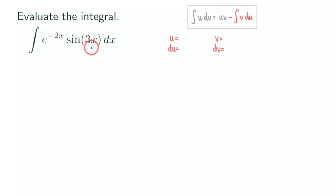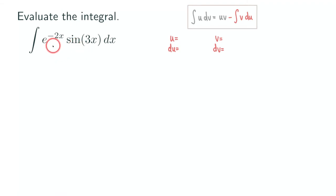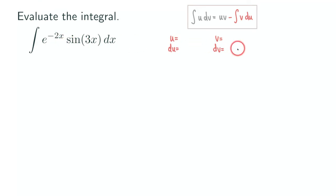You just look at the coefficient. Whichever one has a coefficient of one, you would probably want to choose that as the dv. But in this case they are not one, so we don't really have a preference. It depends on whether you like to integrate the exponential function or the trig function. It's probably easier to integrate the exponential function, so we'll just let u be sine of 3x. But again, it doesn't matter — you can let u be e to the negative 2x, it makes no difference.